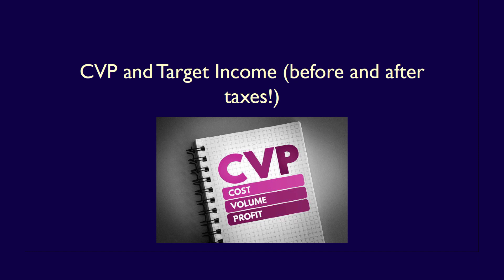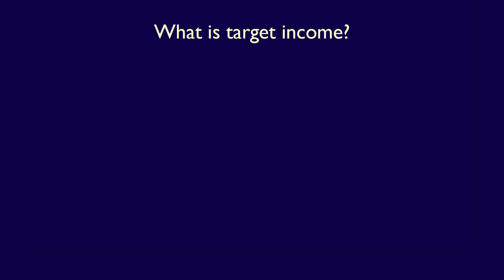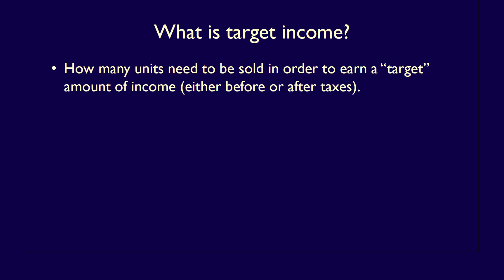How can we use CVP analysis to calculate target income, both before and after taxes? First, we need to understand what target income is. Managers often want to make a specific profit, either because they are required to do so by their shareholders or to meet goals set by the company. CVP analysis allows managers to determine what they have to sell in order to earn a target amount of income, either before-tax income or after-tax income, also called net income.